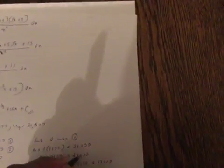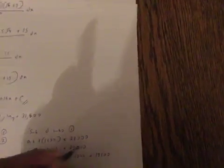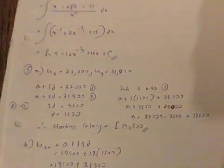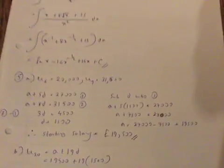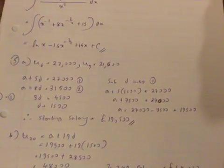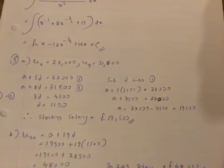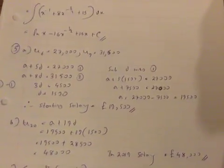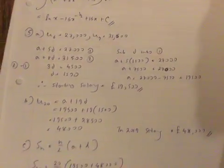Correcting that: a + 7,500 = 27,000, so a = 27,000 - 7,500 = 19,500. The starting salary was £19,500.